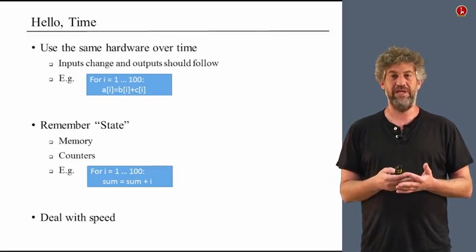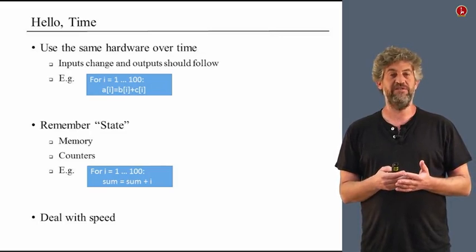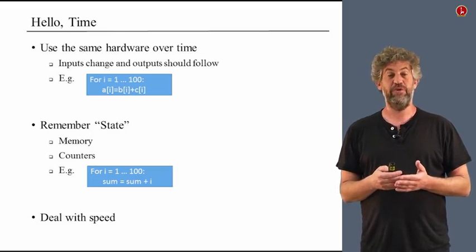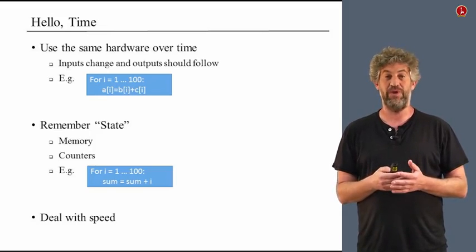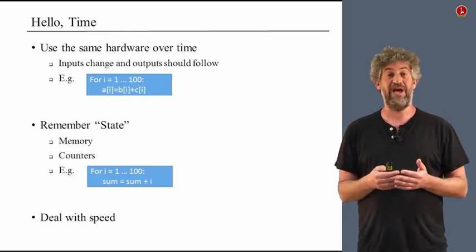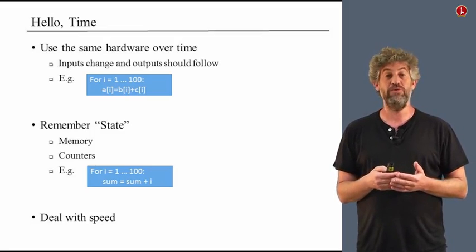So what kind of thing do we need from time? On the positive side, there are two issues. The first thing is we want to be able to use the same hardware to compute many things one time after another. If we know how to add two numbers, we don't want to use a certain piece of hardware to just once add two numbers. We want to use the same piece of hardware to add numbers every time we need to add them — just one after another. So we need to be able to reuse our hardware.